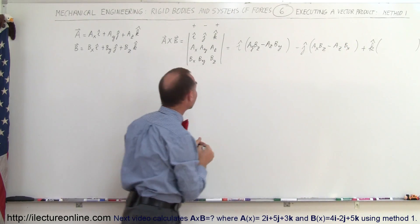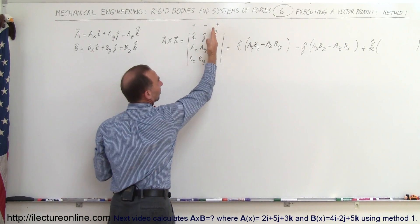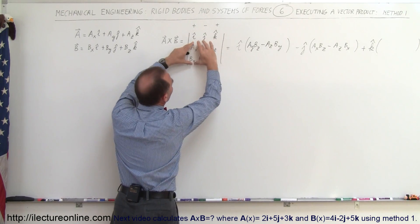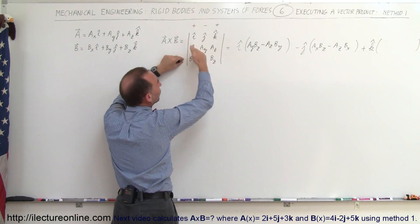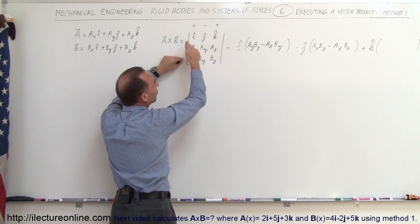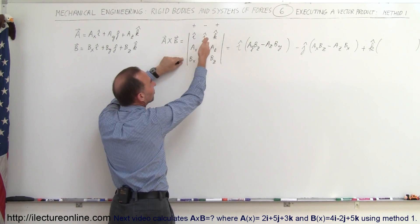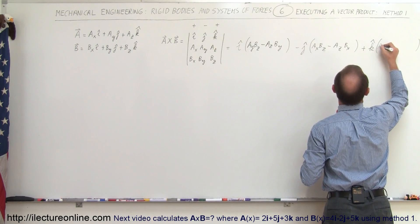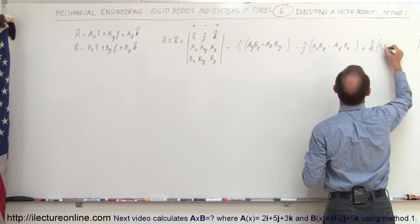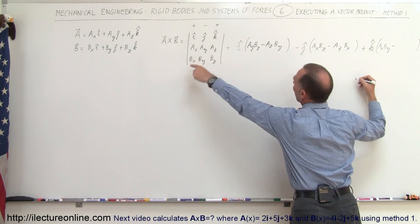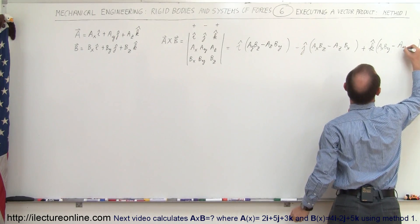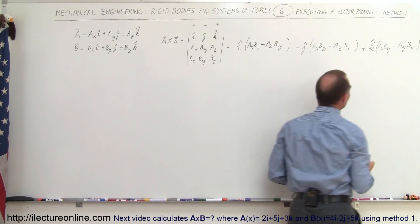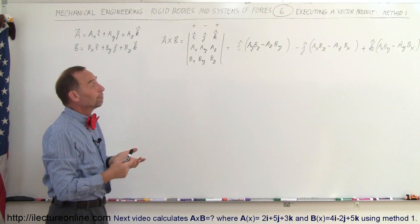And finally, when you take the k unit vector, you cross out this column and this row, so you're left with these four elements, and again you multiply those two elements minus those two elements. So this becomes Ax times By minus Ay times Bx. And that's how you find the cross product using this method.